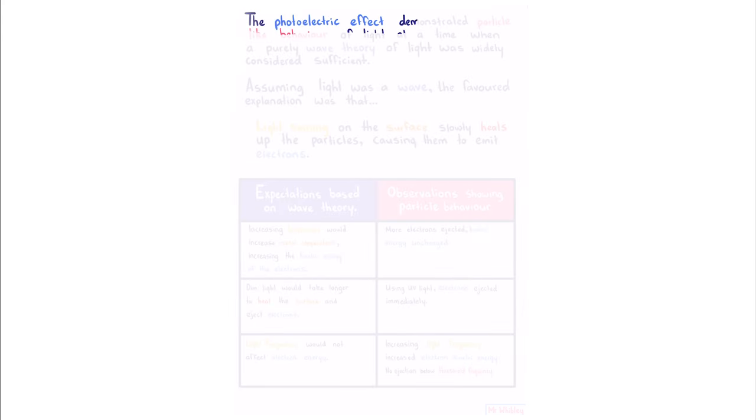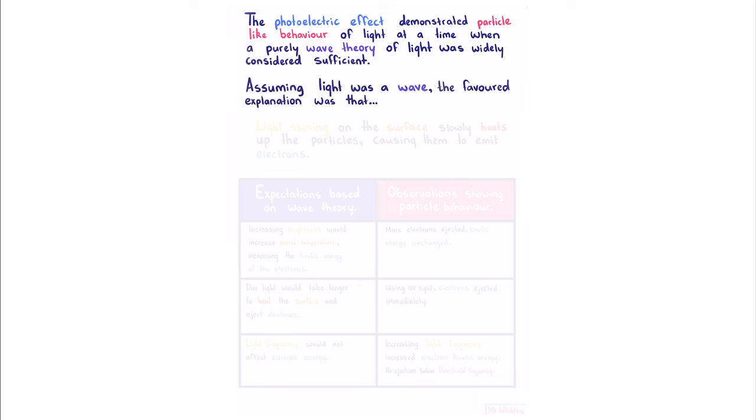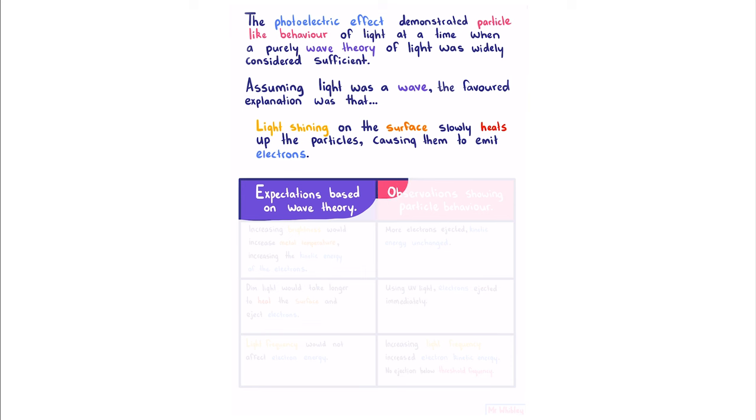The photoelectric effect demonstrated particle-like behavior of light at a time when a purely wave theory of light was widely considered sufficient. Assuming light was a wave, the favored explanation was that light shining on the surface slowly heats up the particles, causing them to emit electrons. We're now going to go through some expectations based on the wave theory of light and the observations which showed particle-like behavior.